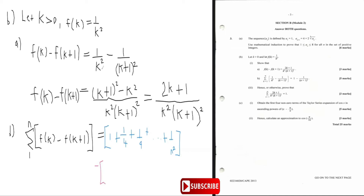Now for f of k plus one: when k equals one, you get one over one plus one squared, which is one over four, so minus one over four. When k equals two, k plus one is three, three squared is nine, so minus one over nine. You keep plugging in values until the last term: when k equals n, you get one over n plus one all squared.